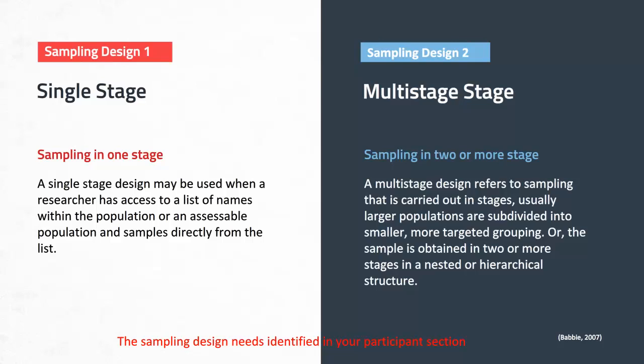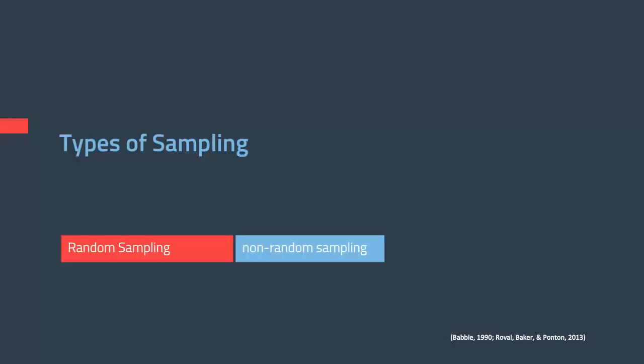You can use multiple different types of sampling at each stage, but in your participants section you need to talk about your sampling design — whether you'll use a one-stage or two-stage design. Now we'll talk about sampling methods and techniques you can use within either design. There are two types of sampling: random sampling and non-random sampling.